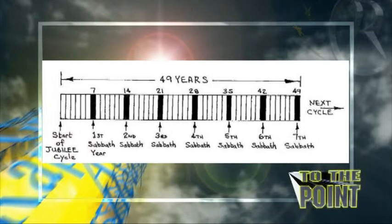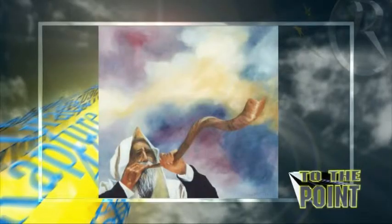Verse 9 says, 'Then in this 49th year, you shall cause the trumpet of the Jubilee to sound on the tenth day of the seventh month.' On the Day of Atonement, you shall make the trumpet sound throughout your land. This was the sounding of the Jubilee trumpet.